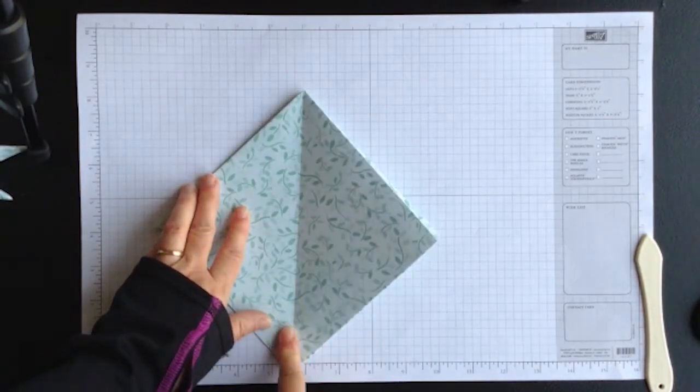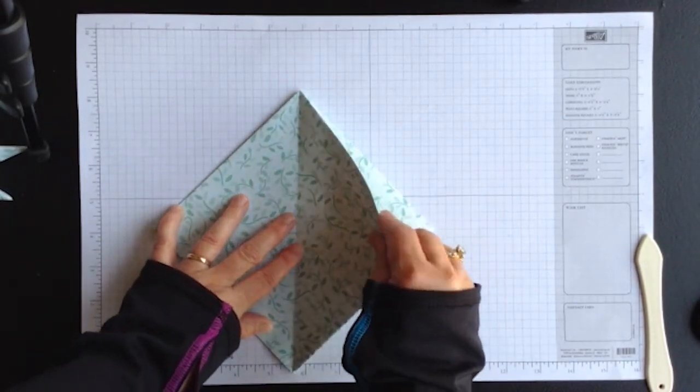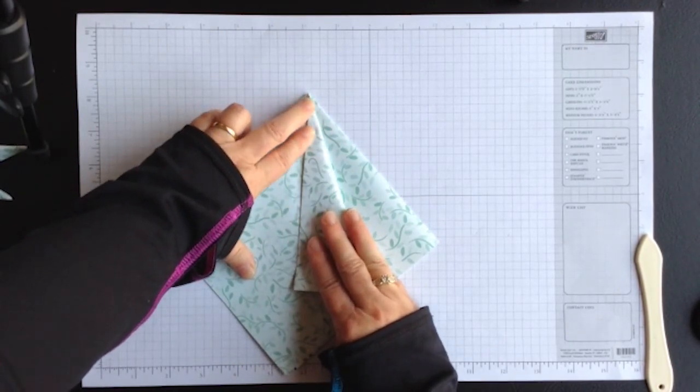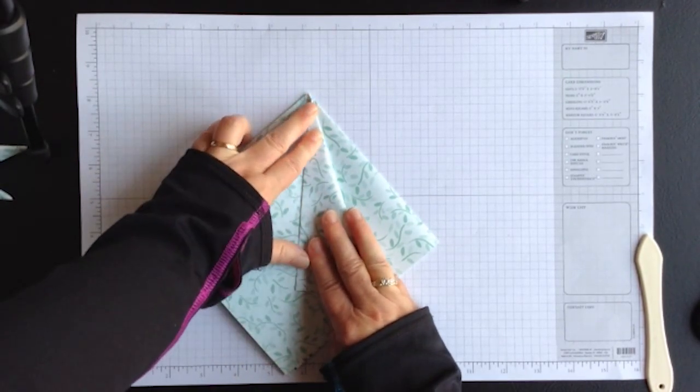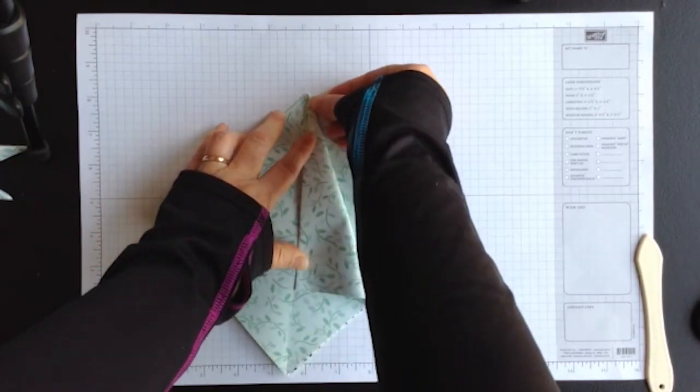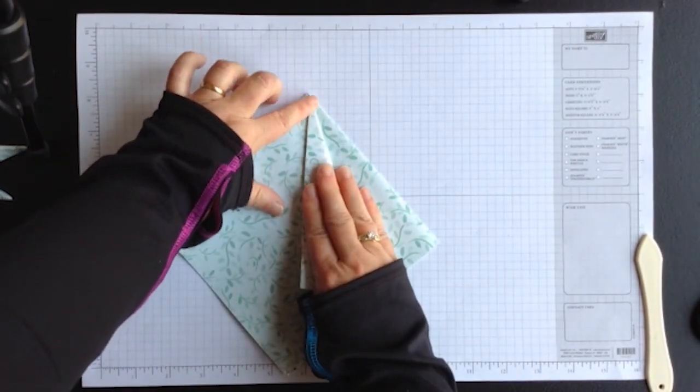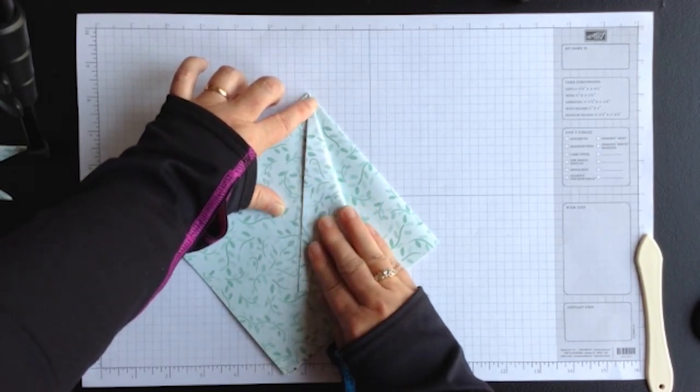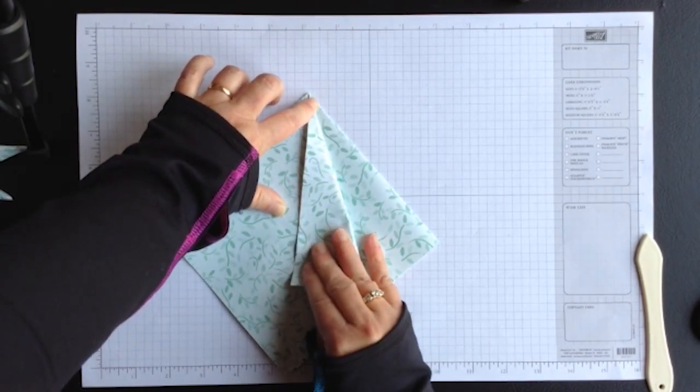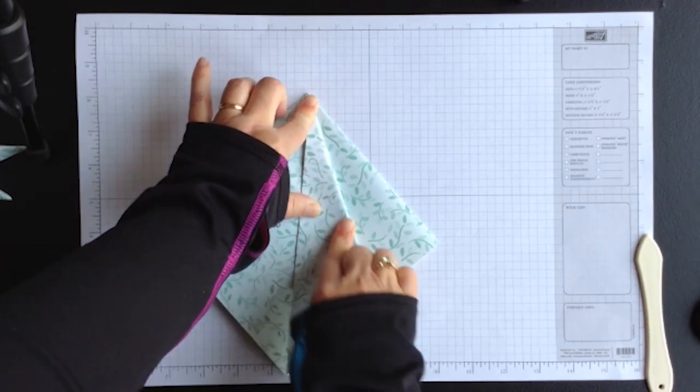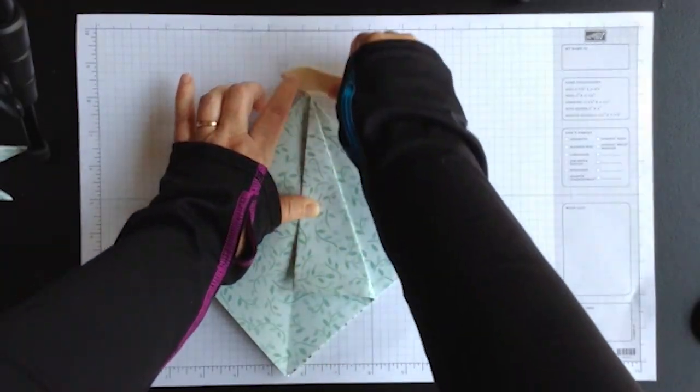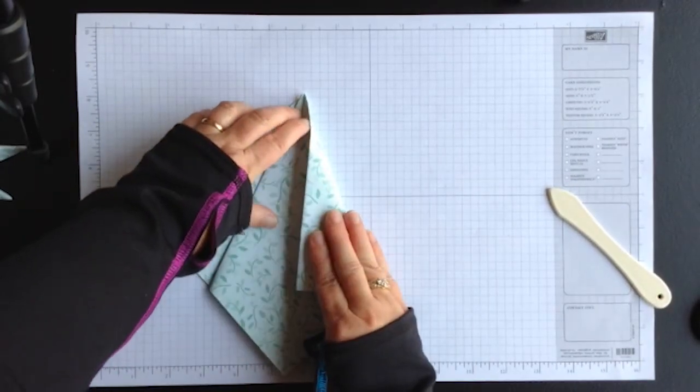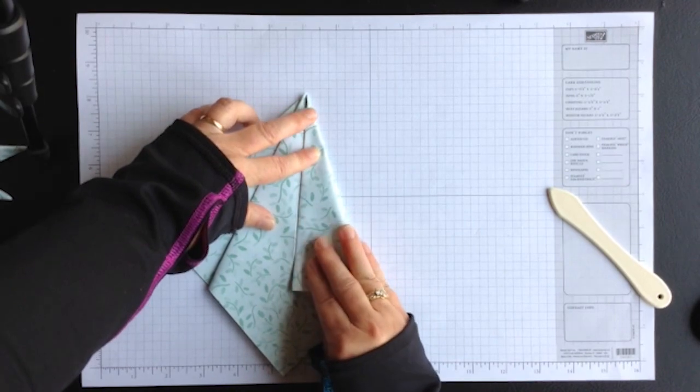Look for this center line and take each flap and fold to that center line. Take a moment to make sure that you have the tip lined up and work your way around so that each of the flaps are folded.